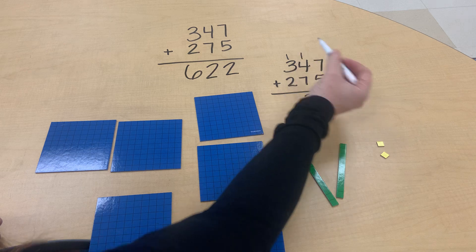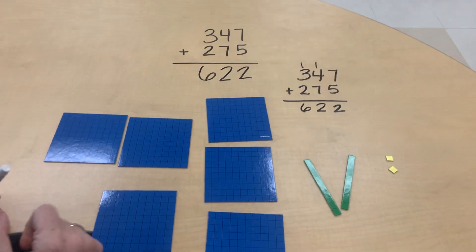And then we have to add our hundreds place. Three, four, five, six. So our answer is six hundred twenty-two.